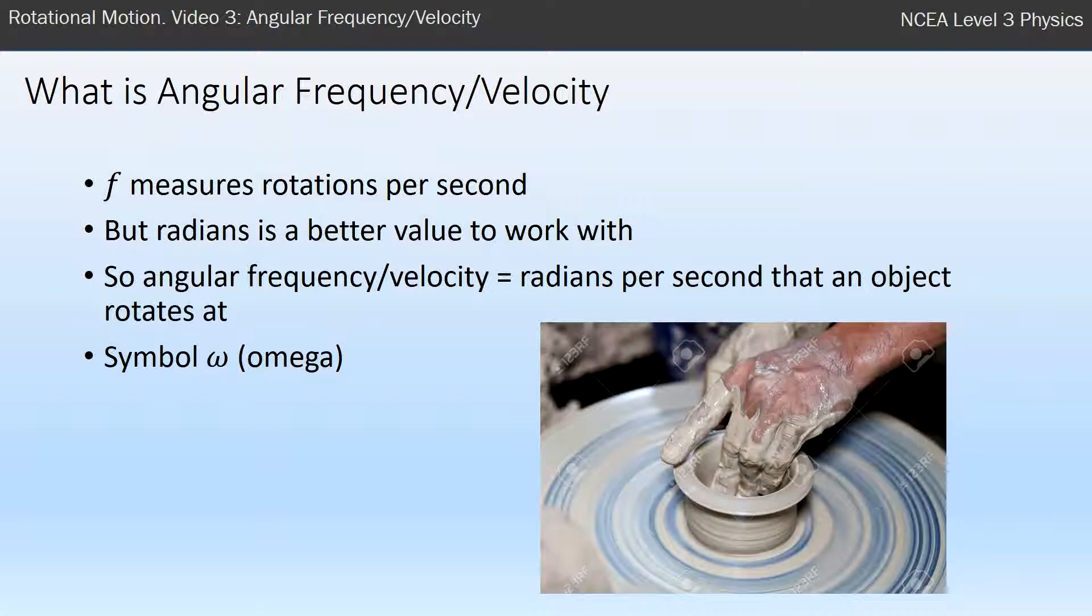The symbol for angular frequency is the Greek letter omega, which is similar to a curly w, and the units for angular frequency or angular velocity are radians per second. So normal velocity is measured in meters per second, and this is looking at how many radians we're turning through each second, so it's radians per second.